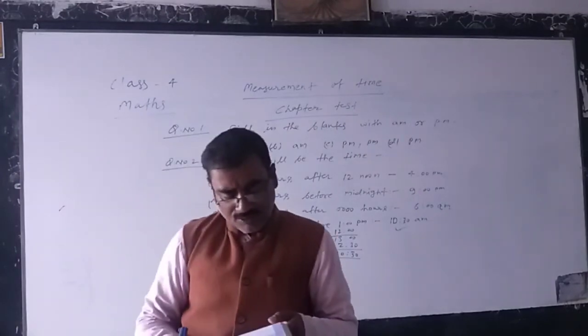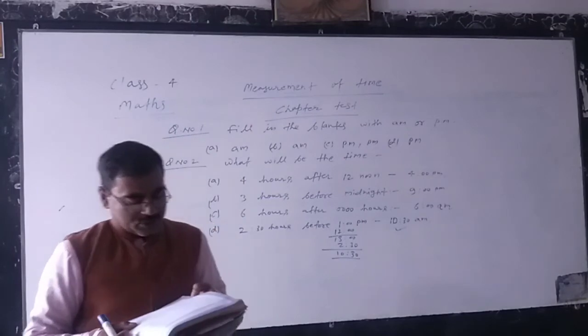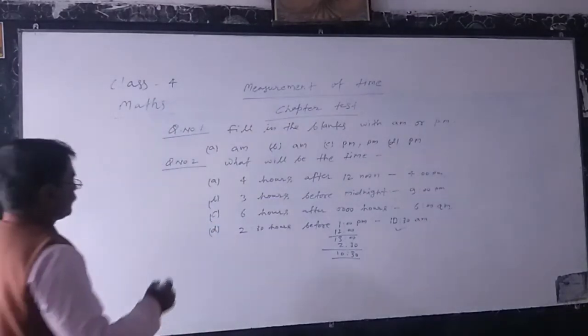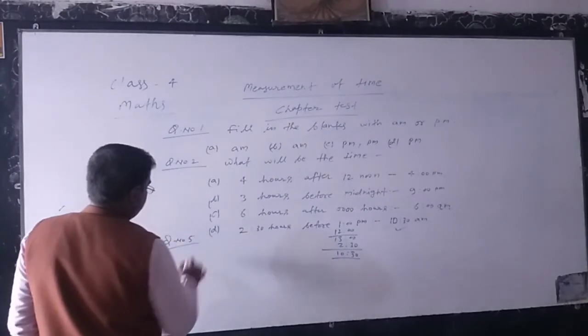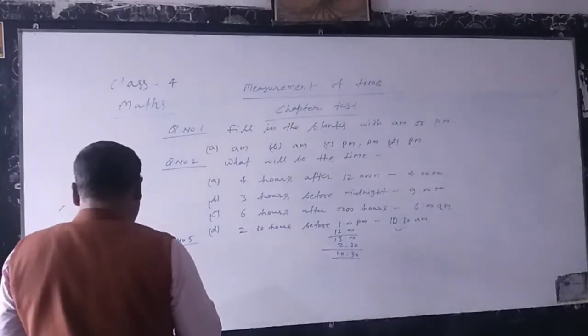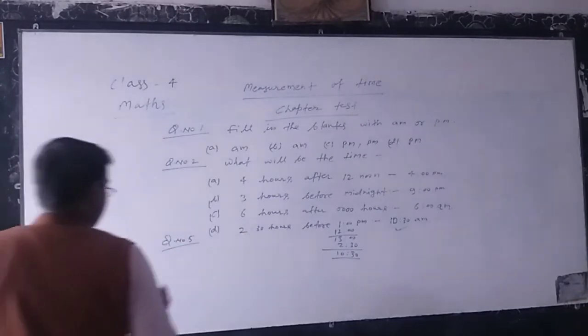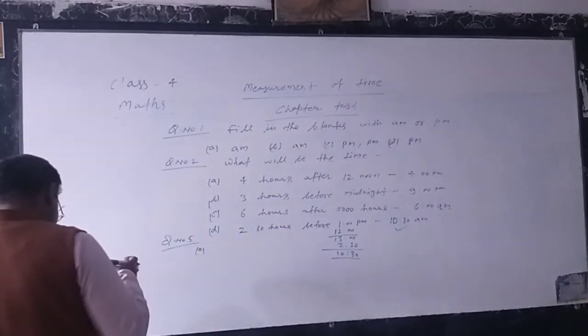In this way you solve question number 1 and 2. I teach you another and last question, question number 5. You circle the correct answer from the given alternative answer.